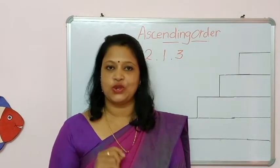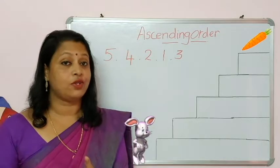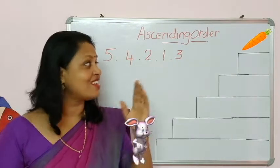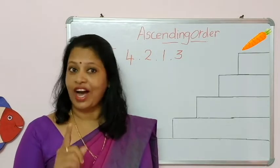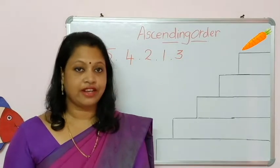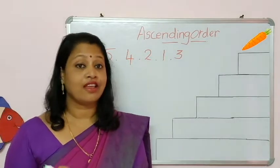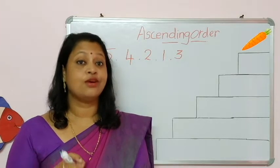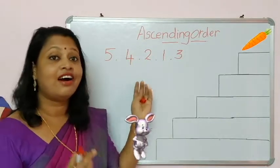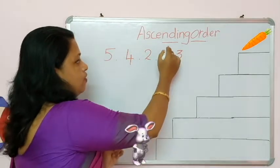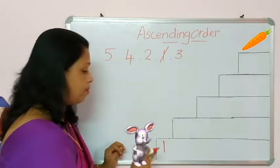Now I am going to show you one example of ascending order. Here is Mr. Bunny. You have to help him to reach his carrot. But poor bunny doesn't know counting, so you have to help him. Children, here there are some numbers. You have to arrange them in ascending order — from small to big. Which is the smallest number here? Right, number 1. So cut this number 1 and write it here. Now the bunny is on number 1.